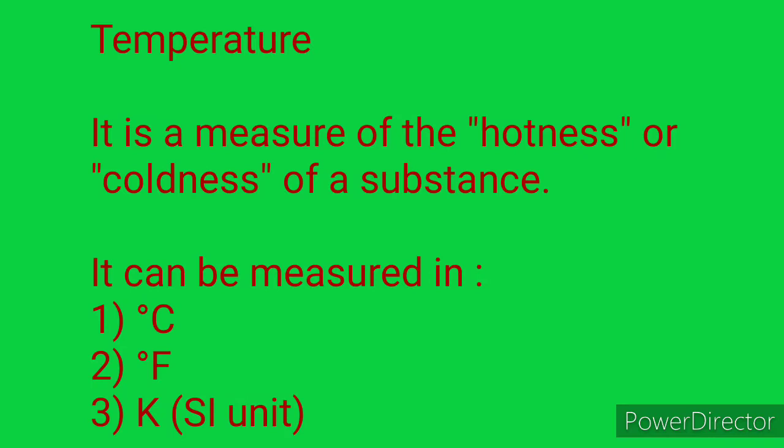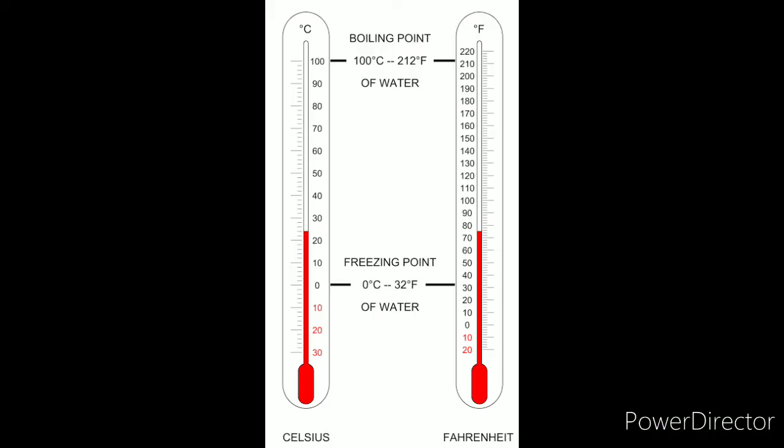The next quantity is temperature. Temperature is a measure of the hotness or coldness of a substance. There are three scales used to measure temperature: degree Celsius, degree Fahrenheit, and Kelvin. Kelvin is the SI unit of temperature. A thermometer is the instrument used to measure temperature.